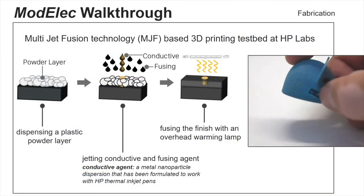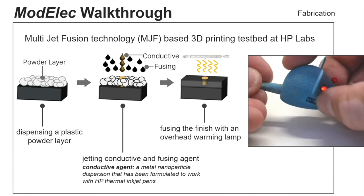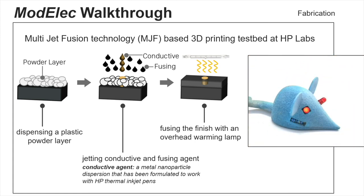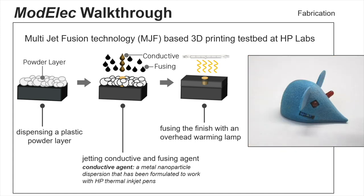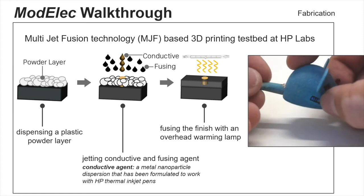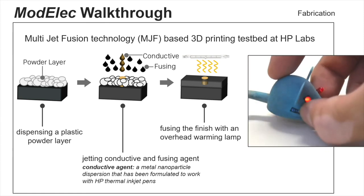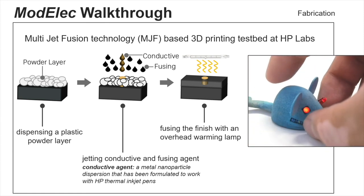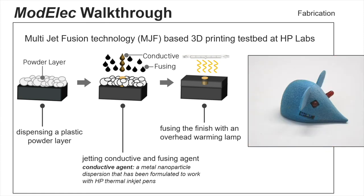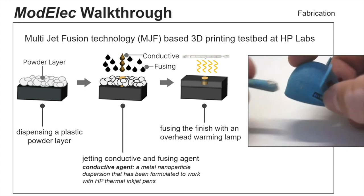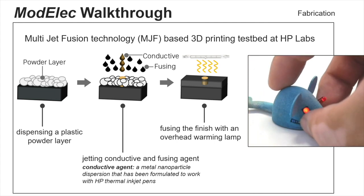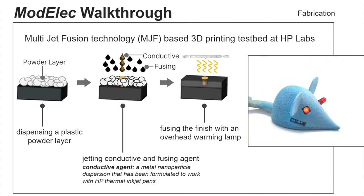Let's talk about the fabrication process. We are using an MJF-based 3D printer at HP. That is a testbed — it's not commercially available. The process looks like this: first, we lay out one layer of powder.